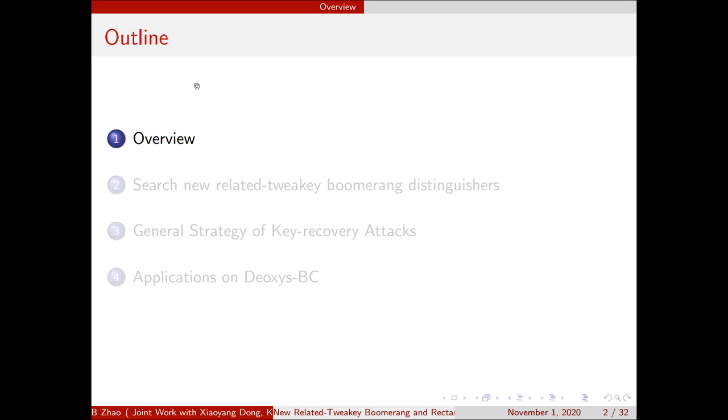The presentation consists of four parts: the overview of such new related-tweakey boomerang distinguishers and the general strategy of key-recovery attacks. And for the last, we will give two examples of attacks on Dioxys BC.